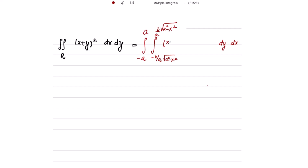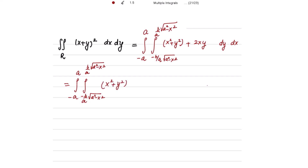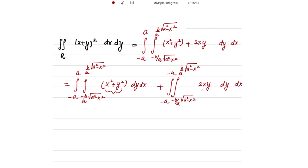Opening the bracket, (x + y)² = x² + y² + 2xy. Taking x² + y² together and 2xy separately, the integral from -a to a splits into two parts. The first part with x² + y² is an even function, and the second part with 2xy is an odd function.